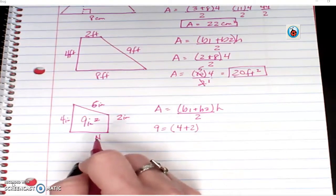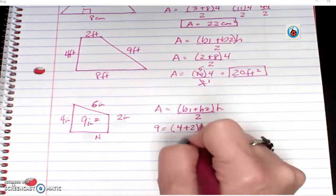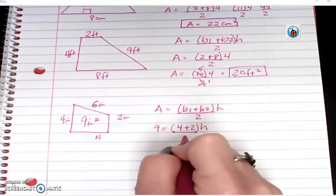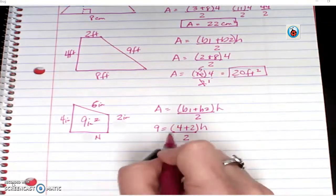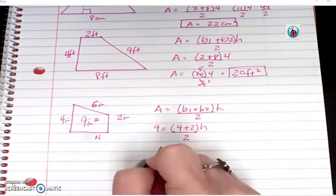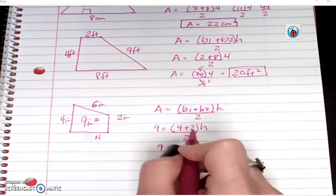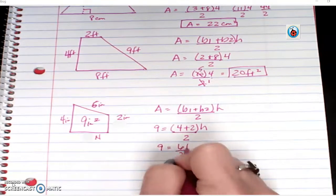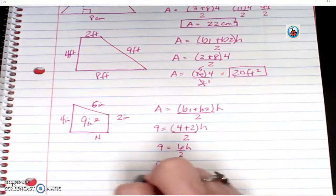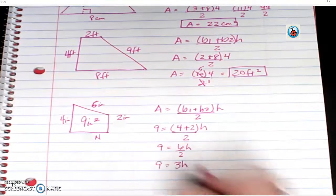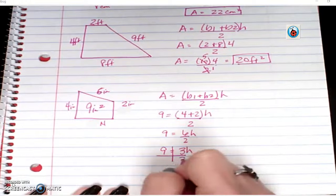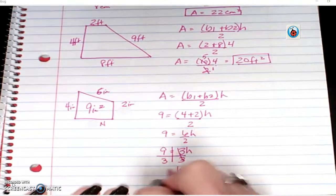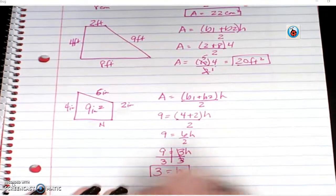And it's my height that I don't know. So I'm going to keep the H, but this does get divided by 2. I now take 4 plus 2 is 6. 6 divided by 2 is 3H. H isn't by itself yet, so I divide both sides by 3. And H does equal 3.